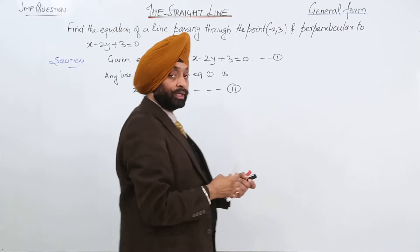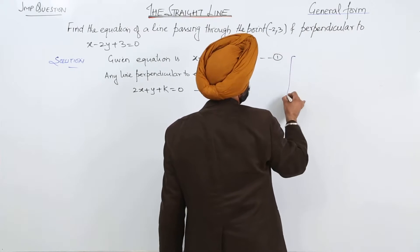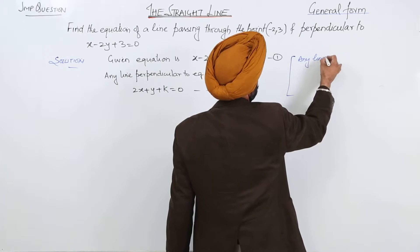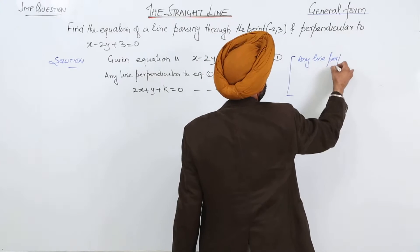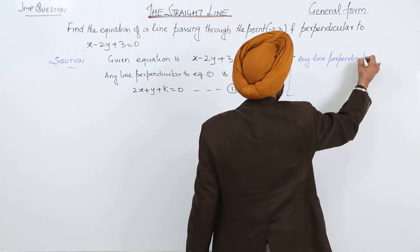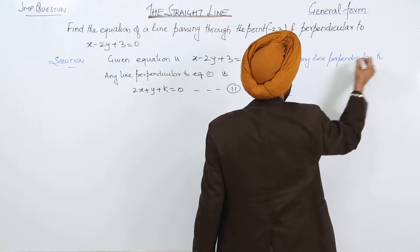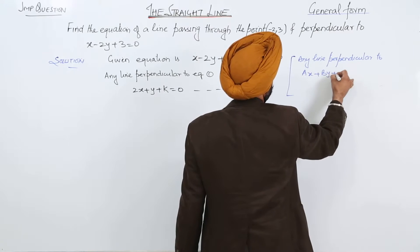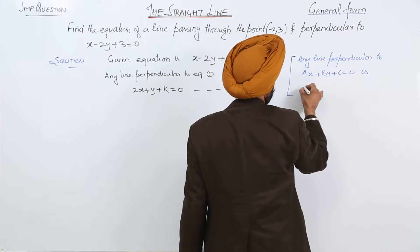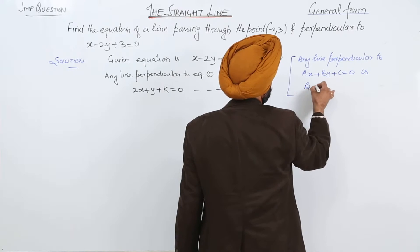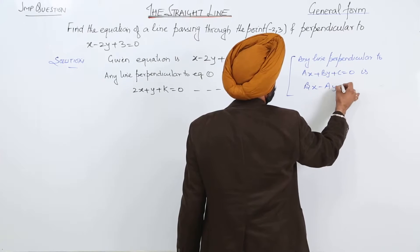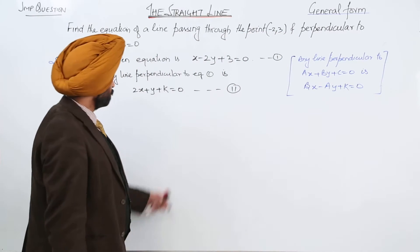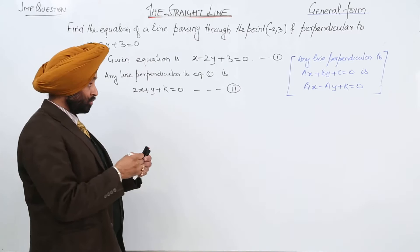We have already gone through the result. Any line perpendicular to ax plus by plus c is equal to 0 is bx minus ay plus k is equal to 0. We have done this concept, so that is why directly I have written the equation.